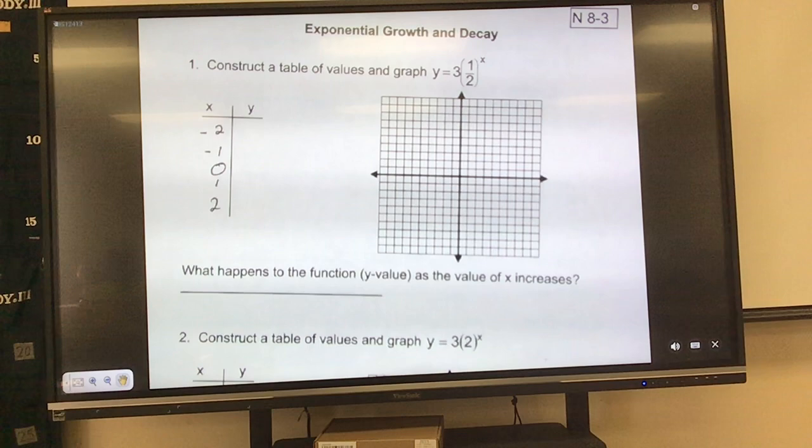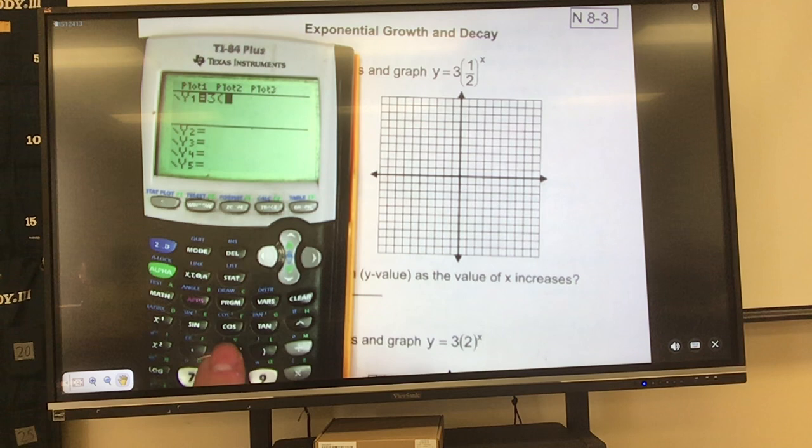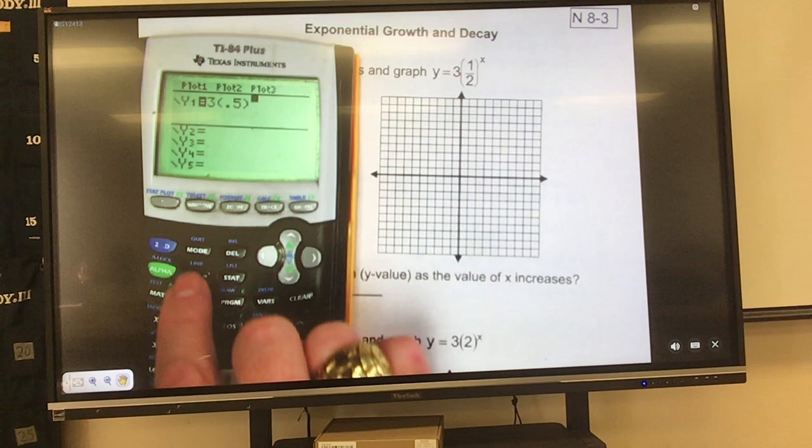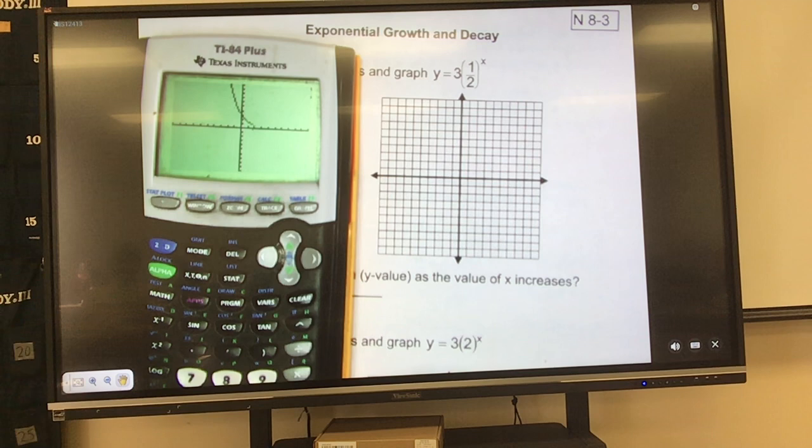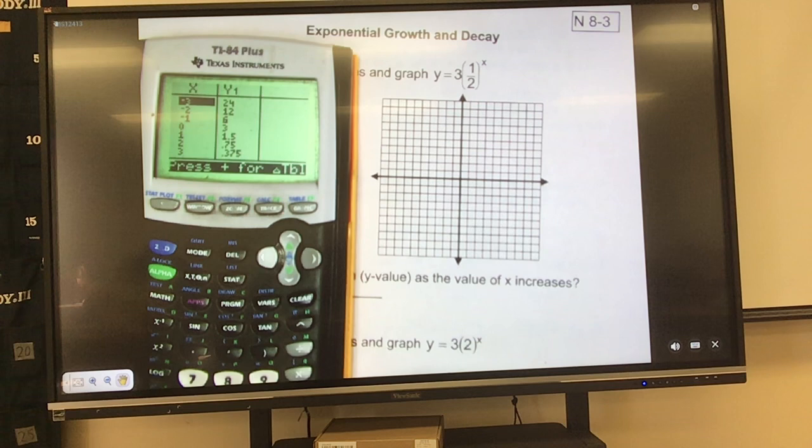So here we go. First thing, put it in a calculator. We've got to clear whatever the other class had in, put in three parentheses, 0.5, close them, raise to the x power, hit graph, and what is that graph doing from left to right? Going up or going down? Down. Going down. Okay, so let's go ahead and get the points. Second graph to get to my table.